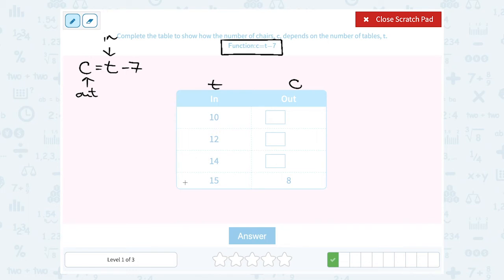And of course you can check this with the example to make sure. When we put in 15, we get 8. Well if you put in 15 for t, 15 minus 7 gives you 8. So it works. And then of course we want to get the missing numbers for all three of these.